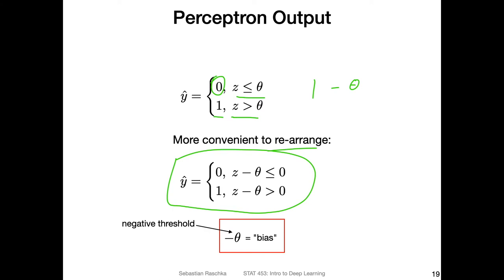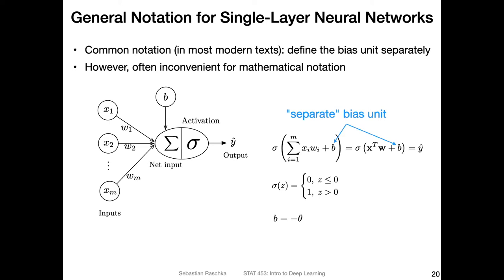In this more convenient notation, you can think of the negative threshold — this part — as a bias. Bias unit is a common term in deep learning and machine learning, though the word bias is a bit overloaded: there's inductive bias, fairness bias, mathematical bias unit, and statistical bias in the bias-variance decomposition. In the context of deep learning, the bias unit here refers to this theta treated as a parameter.